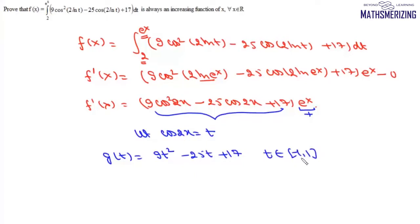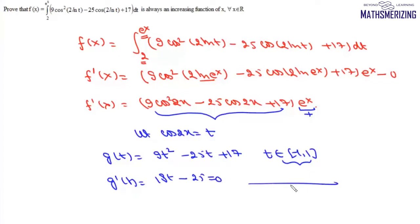This is a quadratic expression with domain bounded between -1 and +1. Finding g'(t): g'(t) = 18t - 25. Setting it equal to 0 gives t = 25/18. Since 25/18 > 1, the critical point lies outside our interval. Within [-1, +1], g'(t) is negative, so g(t) is a decreasing function on this interval.